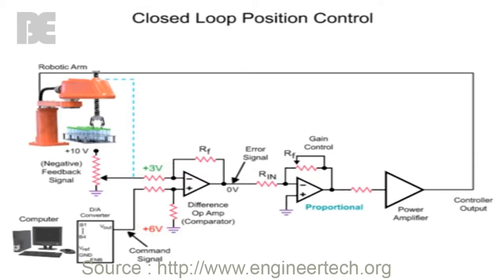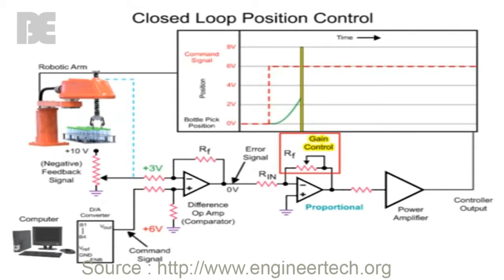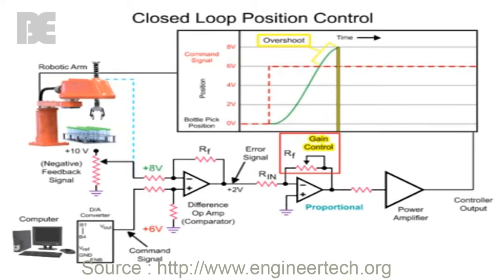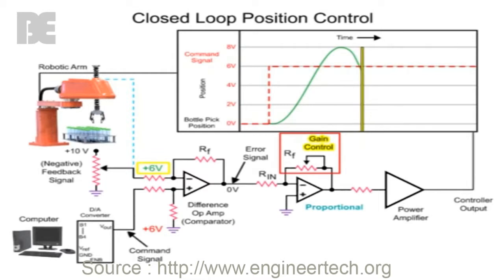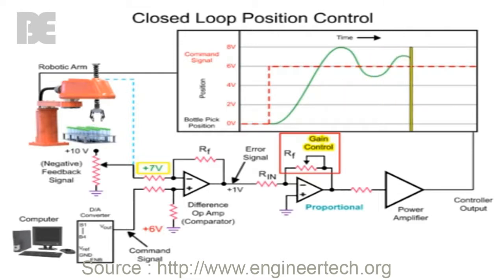To increase the response time of the robotic arm to the command signal, the gain of the proportional amplifier can be increased. However, increasing the gain has a disadvantage where the robotic arm overshoots the targeted position. When this occurs, the feedback signal is greater than the command signal. The op amp reacts by changing polarity from positive to negative, resulting in reverse rotation of the arm motor. With high gain, the overshoot is repeated again in the opposite direction, and this repeats until the robotic arm motor stabilizes.